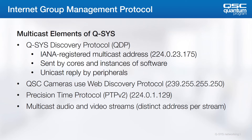Q-SYS uses a number of multicast elements to do its job. The Q-SYS discovery protocol relies on multicast — instances of the Designer software and Q-SYS cores send multicast discovery packets in search of other Q-SYS devices. When this discovery message is heard by a Q-SYS device, it sends a unicast reply back to the sender. You may notice that you can see a device in Q-SYS Configurator that's on the wrong IP subnet shown in red. Since multicast makes use of virtualized IPs and MAC addresses, it bends the rules a little. Q-SYS cameras also use the web discovery protocol for some specialized features.